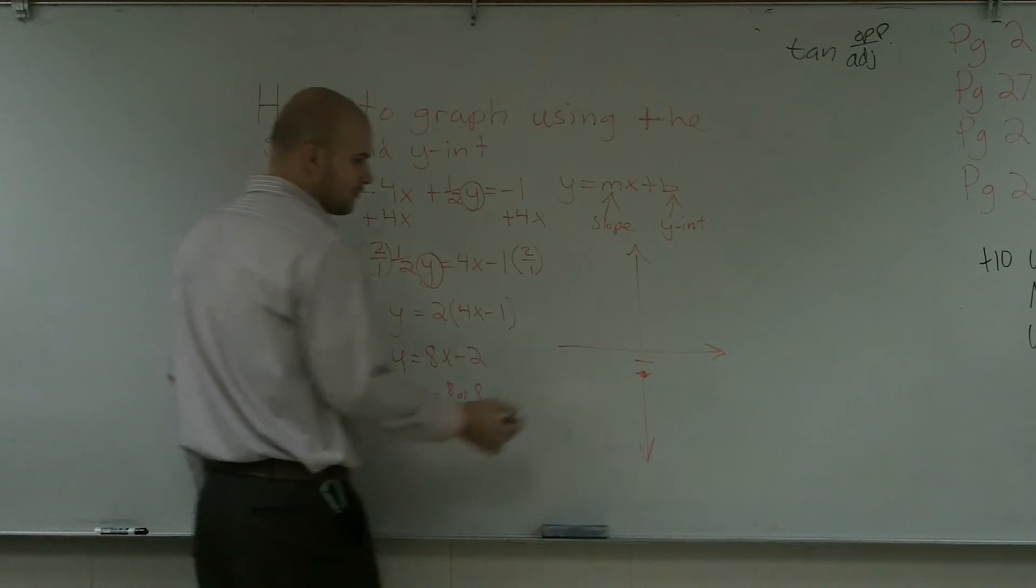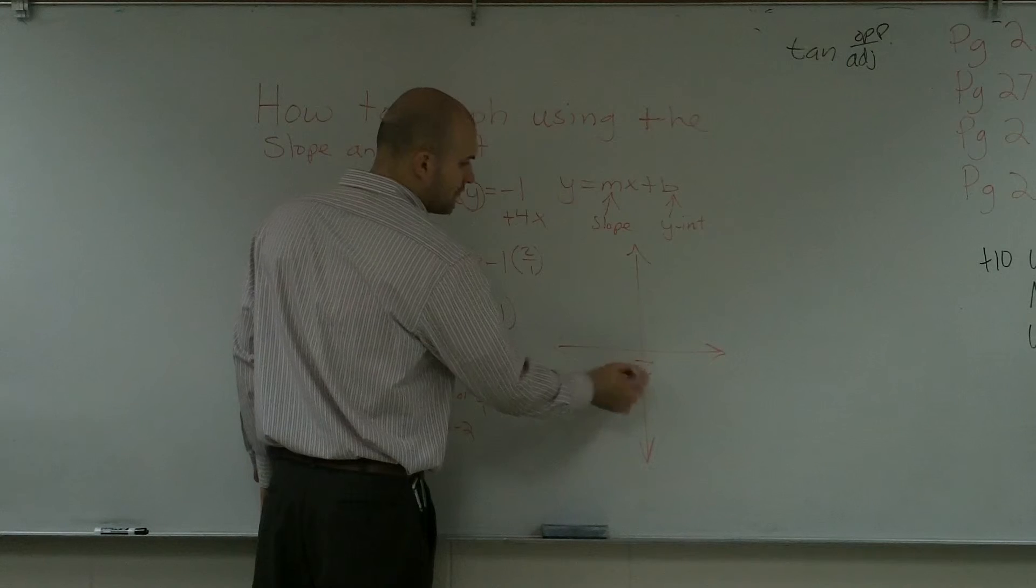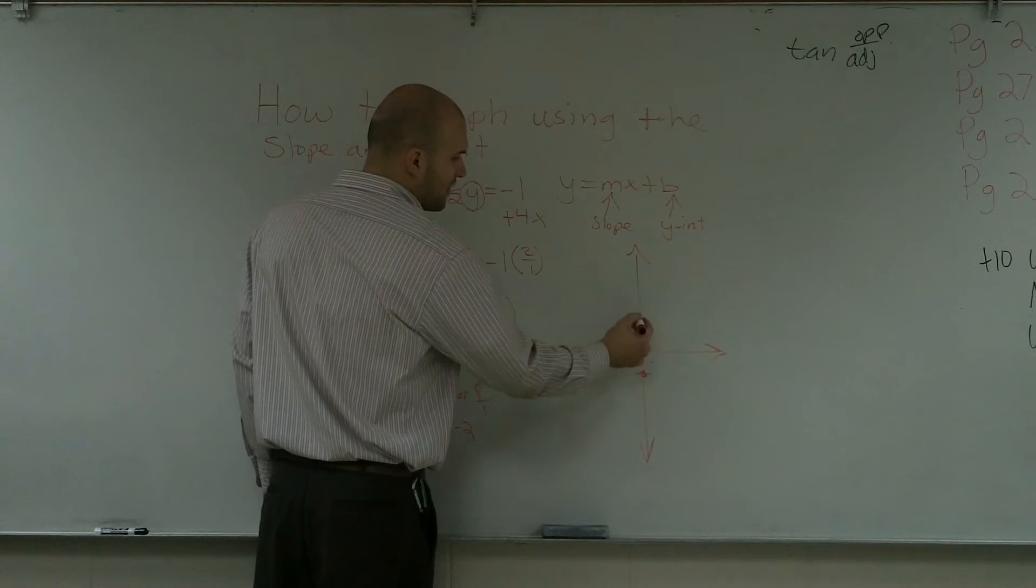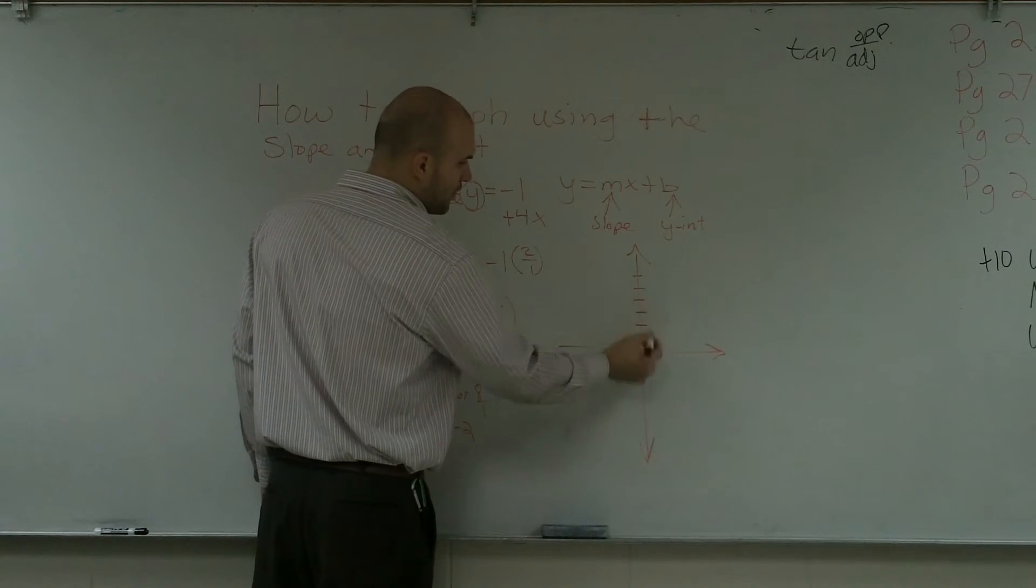And my slope is an 8 over 1, so I'm going to go up 8. So from my y-intercept, I go up 8: 1, 2, 3, 4, 5, 6, 7, 8. And I go over 1.